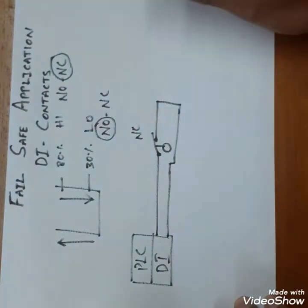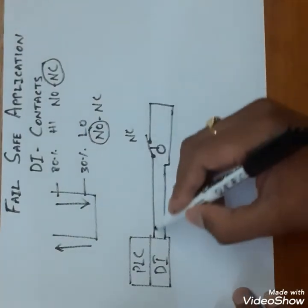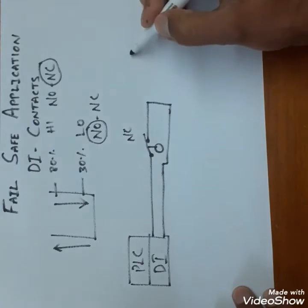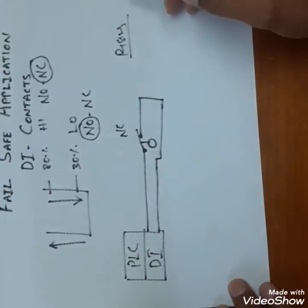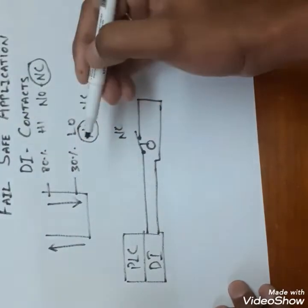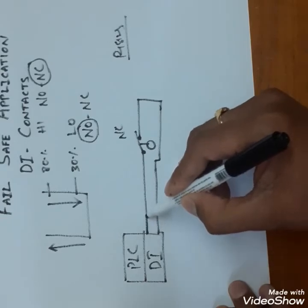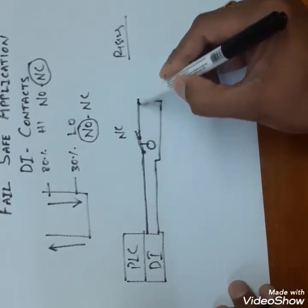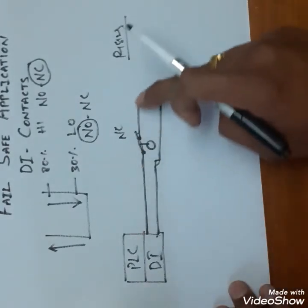So this is an NC level switch and this will be used for rising application. Normally when the level is in between 30 to 80 percent, the loop is always in closed loop circuit, so you have a closed loop here.